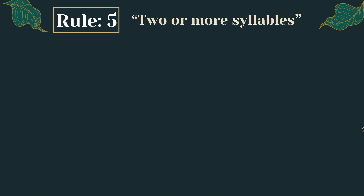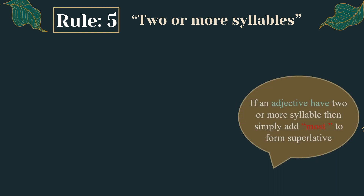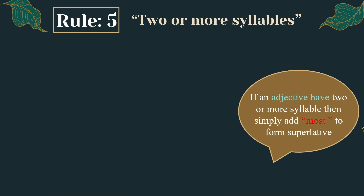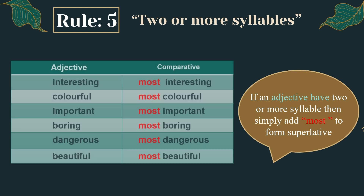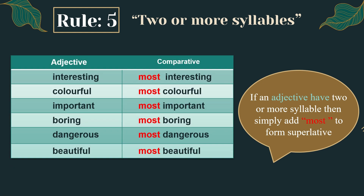Rule number five: two or more syllables. If an adjective has two or more syllables, simply add 'most' in front to form the superlative. For example, 'interesting' becomes 'most interesting' — this adjective has two or more syllables, so we add 'most' before it. Further examples: colorful → most colorful, important → most important, boring → most boring, dangerous → most dangerous, beautiful → most beautiful.